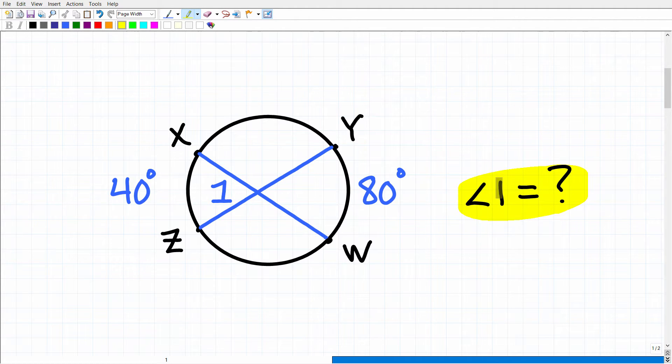So we're looking for angle 1, and here's angle 1 right there. And we have a circle and two arcs, and this arc right here is 40 degrees, and this arc right here is 80 degrees. So we're looking for the measure of angle 1. Okay, so if you can figure this out, go ahead and put your answer into the comment section.